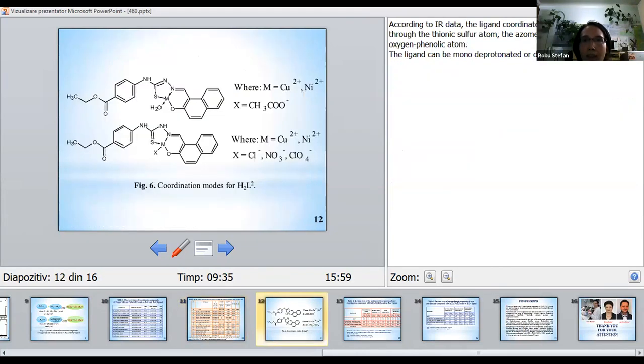According to IR data, the ligand coordinates tridentate to the metal through the thio sulfur atom, azomethine nitrogen atom, and the phenolic oxygen atom. Ligand can be monodeprotonated or doubly deprotonated.